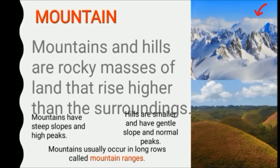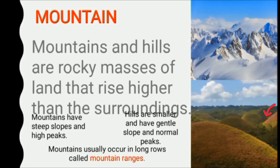As you can see in the picture, these mountains are very high, their slope is steep, and their peak is very high. On the other hand, hills are smaller, they have a very gentle slope and their peaks are not so high. You can see the picture of the hills on your screen.